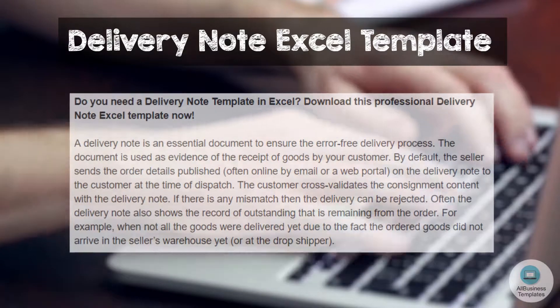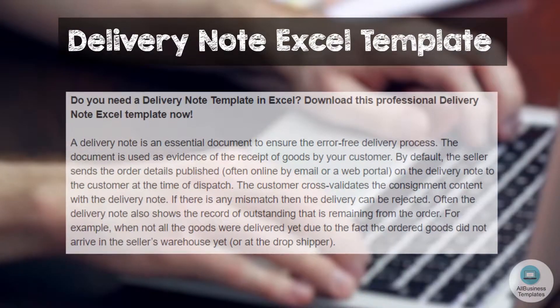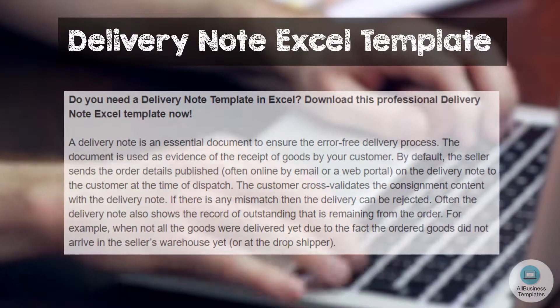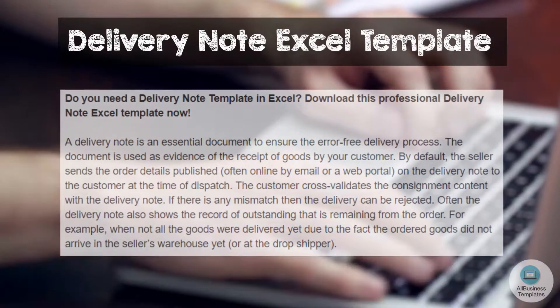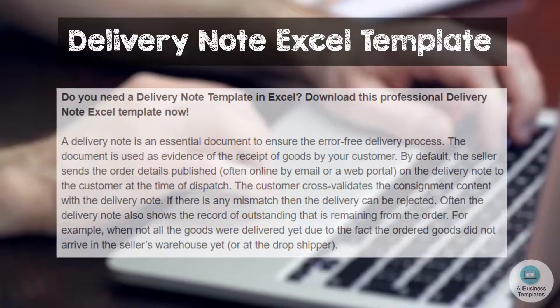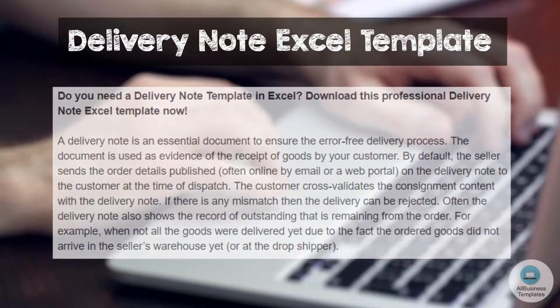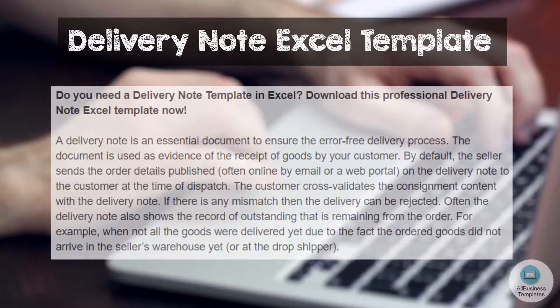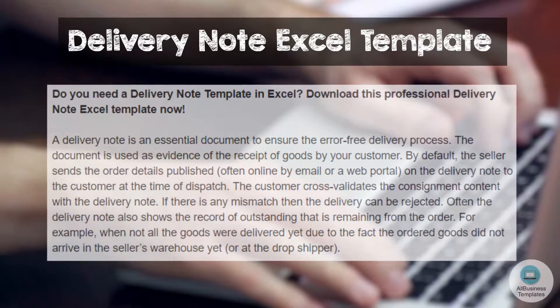Often the Delivery Note also shows the record of outstanding items remaining from the order. For example, when not all the goods were delivered yet due to the fact that the ordered goods did not arrive in the seller's warehouse yet, or at the dropshipper.